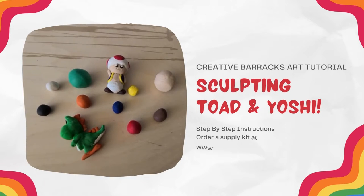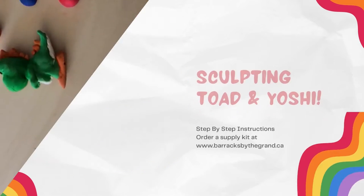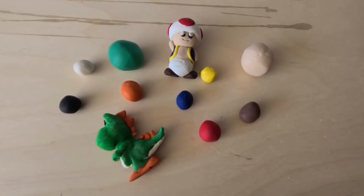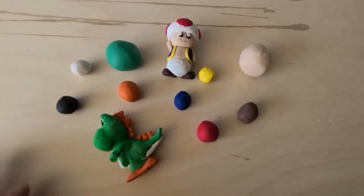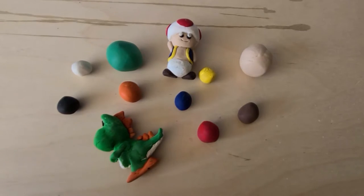Hello Creative Barracks friends! Today we're going to learn how to make Yoshi and Toad. All you need to do is unpackage all of the colors of polymer clay, spread them out so that you've got all of them available to you. Make sure you've got a nice clean working surface in front of you.